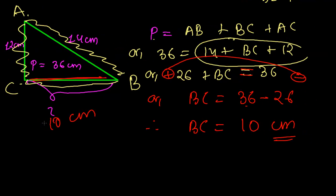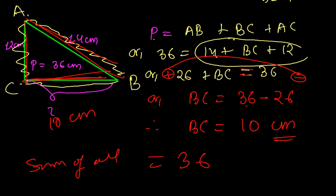We should know what perimeter is first, because perimeter is just the sum of all boundaries. We know that sum of all is 36, and we know two things.